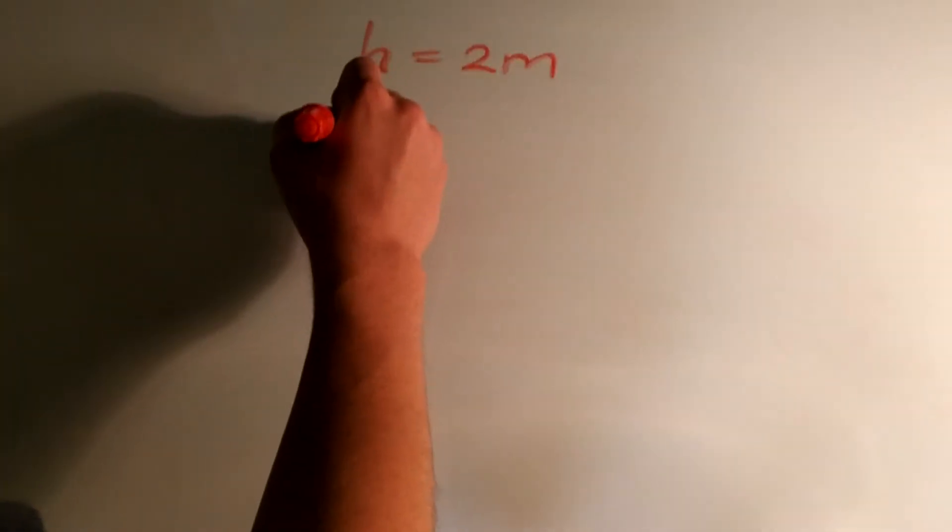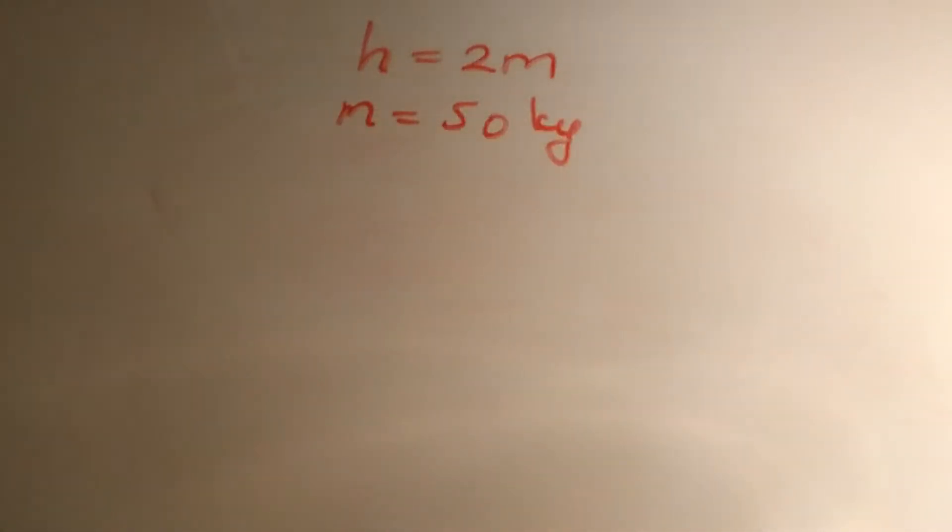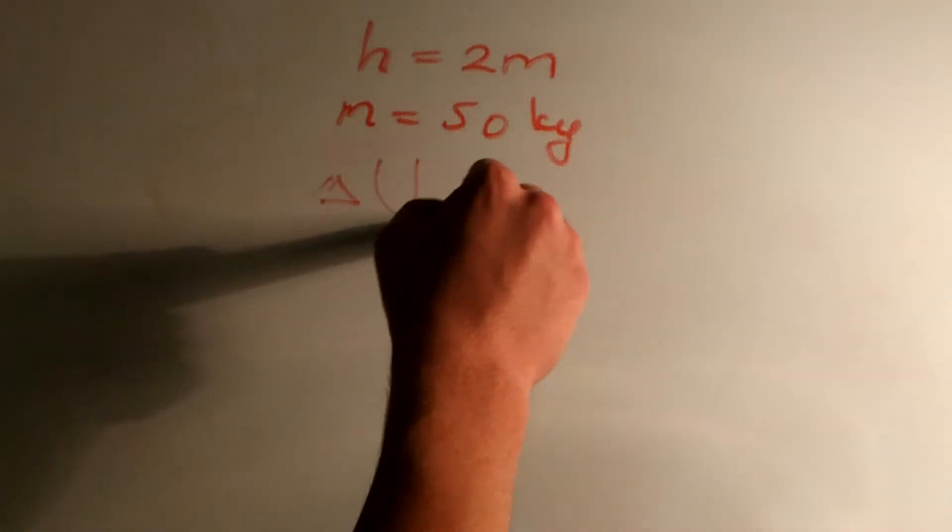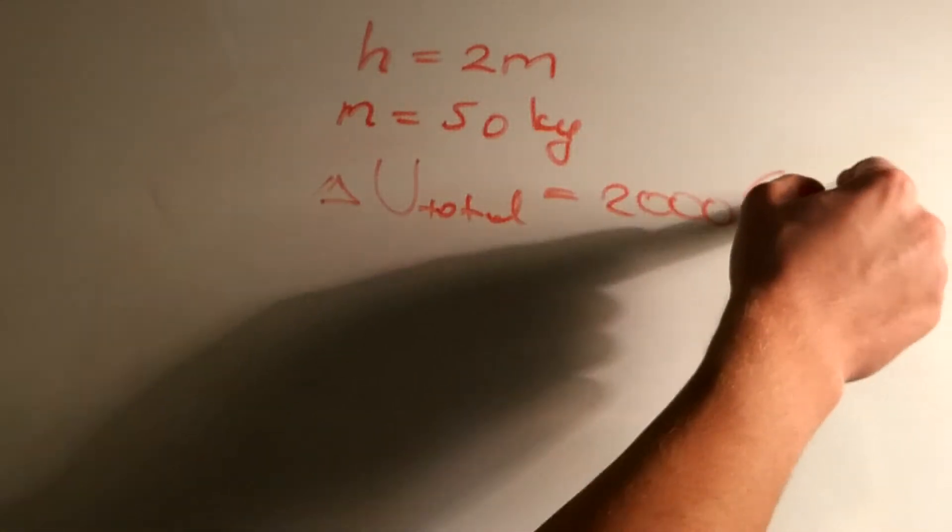So we have that the barbell is lifted 2 meters, the mass of the barbell is 50 kg, and the energy that we need to expel is equal to 2,000 calories.